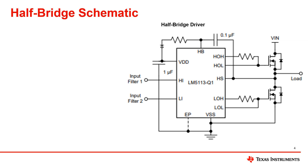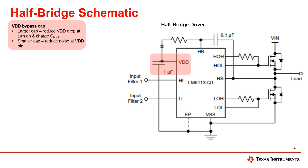I will begin by showing a typical half-bridge gate driver schematic. For a typical half-bridge driver, we recommend having two bypass capacitors at VDD. There is one larger capacitor that reduces the VDD dropout turn-on and also charges the bootstrap capacitor. Then there is a smaller capacitor that reduces any noise that may be present at the VDD pin. For high-speed applications in the nanosecond range, we recommend there not be any input filtering as this will slow down the signal too much. If speed is not a huge factor, then you can consider adding an input filter to clean up your signal.